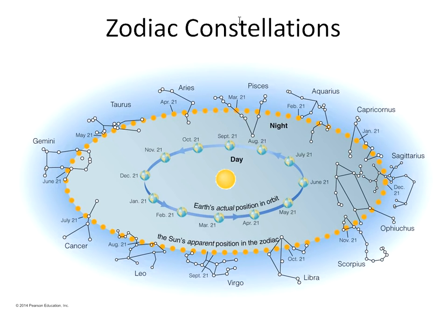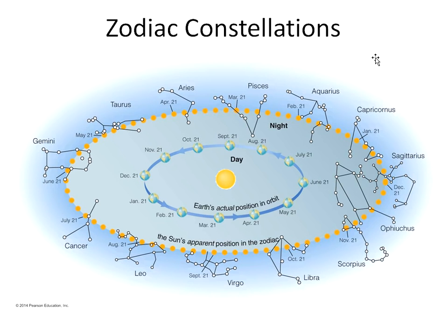These are the famous 12 zodiac constellations. In this picture you can imagine that as the Earth orbits around the sun, different days of the year the sun is going to line up with different constellations. This set of 12 constellations are the ones that the sun appears to line up with as the Earth orbits it throughout the year. I'm going to post another video on a zodiac constellation project, and I will see you over there.